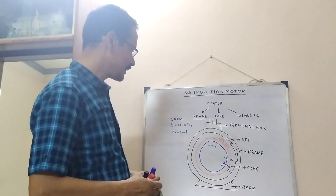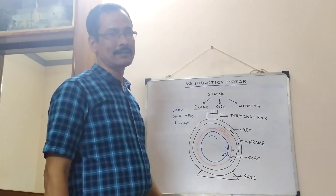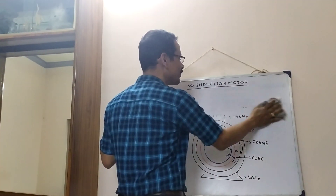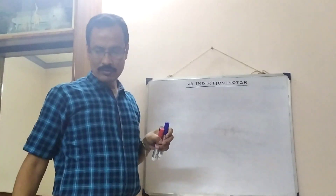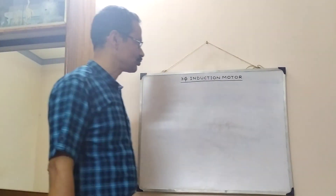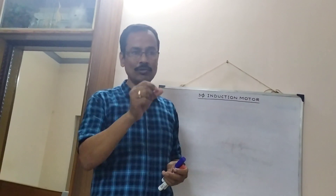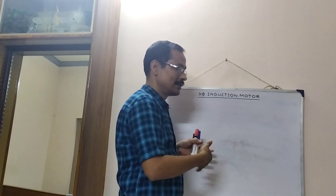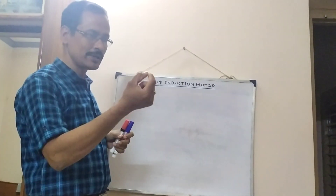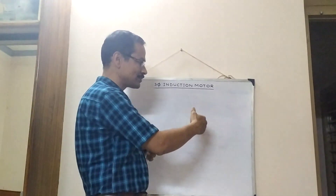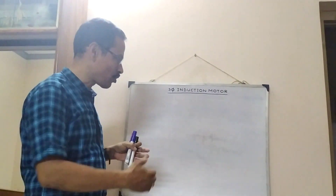If you are using a stator core, it has a straight-forward frame structure — a laminated structure. Why is it a laminated structure? Lamination means taking a large piece, cutting it into thin slices. This creates a cylindrical structure made of thin slices. The thickness of each slice is about 0.5 mm. This is what we call lamination.